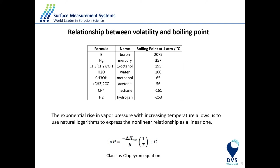Vapor pressure is also strongly correlated with temperature — it rises exponentially with increasing temperature. Using the natural logarithm to express this relationship linearly, we use the Clausius-Clapeyron equation, where ln(P) is equal to the negative heat of vaporization delta H divided by the universal gas constant R and temperature T, and C is the intercept constant for the equation.